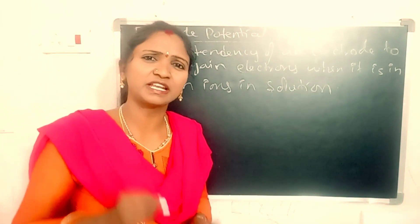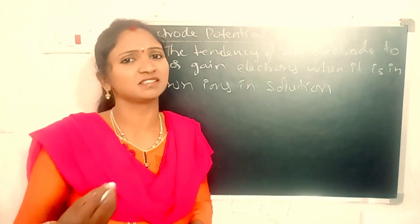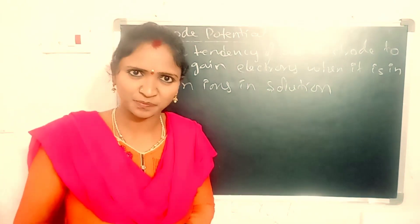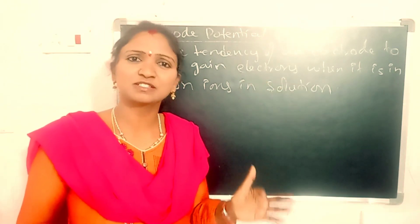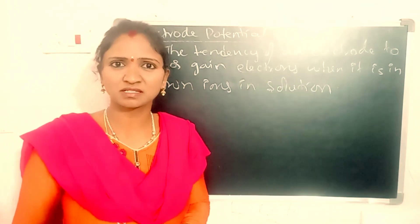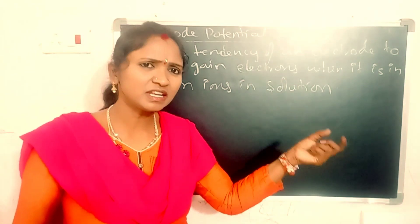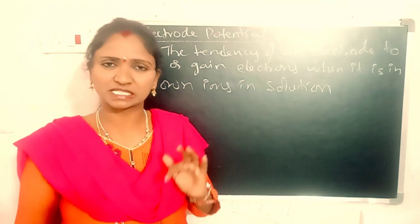For example: zinc electrode present in zinc sulfate, copper electrode present in copper sulfate, silver electrode present in silver nitrate, etc.